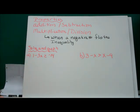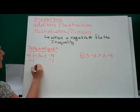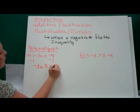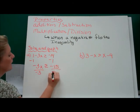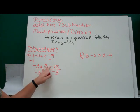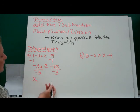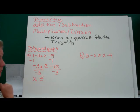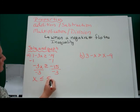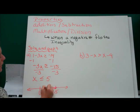So we'll solve and graph. We start by subtracting 1 from both sides, leaving us with negative 3x is greater than or equal to negative 15. Now we divide by negative 3 — we're dividing by a negative, so we have to flip the sign. It was greater than or equal to, now it's less than or equal to. The answer is x ≤ 5. When we graph that: 0, 1, 2, 3, 4, 5 — it's inclusive, meaning it includes 5, and then everything less than that.